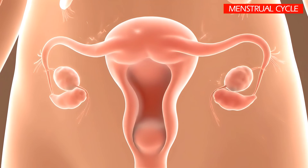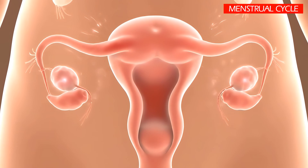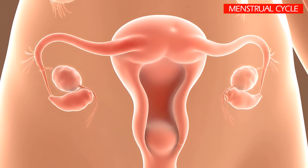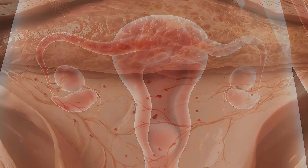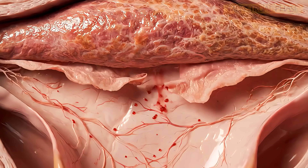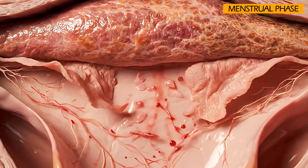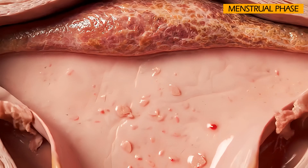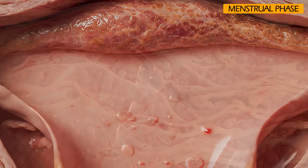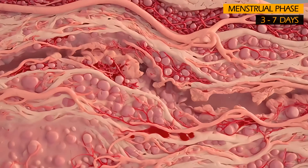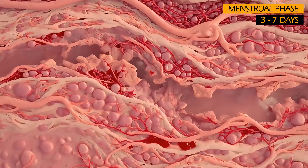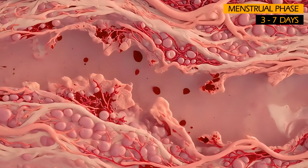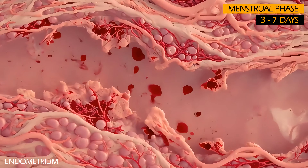The menstrual cycle is broadly divided into four distinct phases. The first phase is the menstrual phase, or menstruation. This phase typically lasts from 3 to 7 days and is characterized by the shedding of the uterine lining, the endometrium.